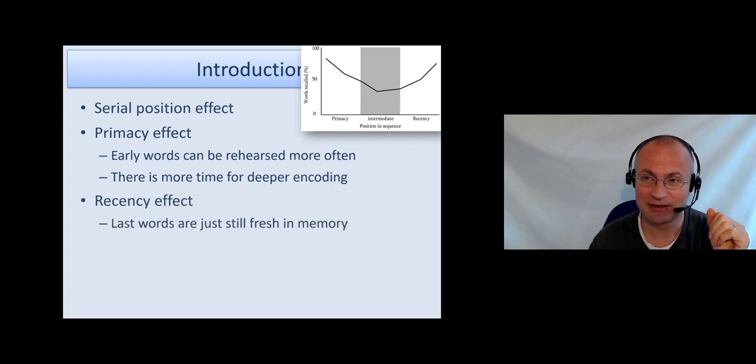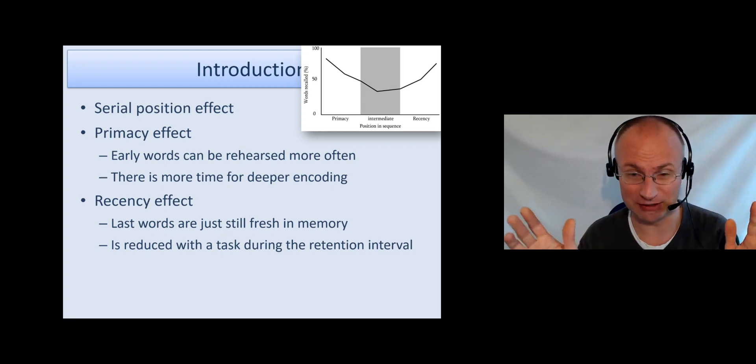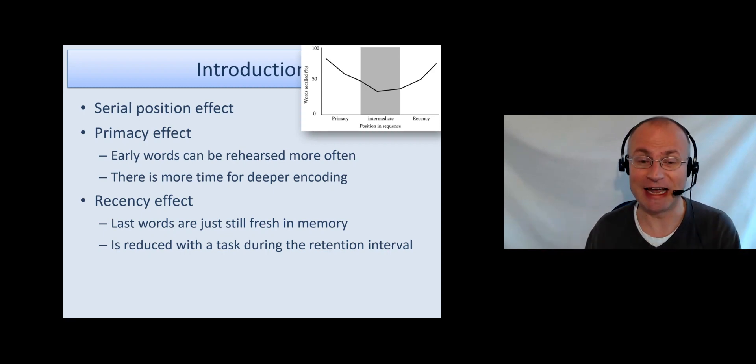The recency effect is that the last words are just still fresh in memory; they're still highly active. The recency effect can be strongly reduced or even completely abolished if you introduce a retention interval. That means the last word stops and you don't have to immediately recall, but you have to wait for, let's say, 10 or 15 seconds, and participants have to do a task during that so they can't rehearse, like this counting backwards. Then you see that the curve goes down and just is flat towards the end.